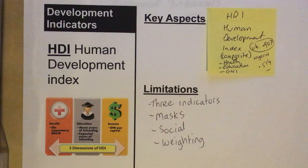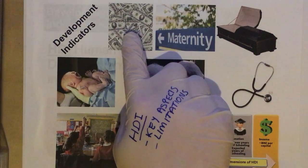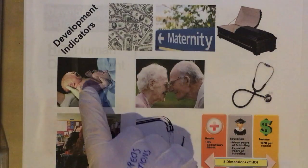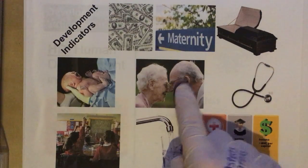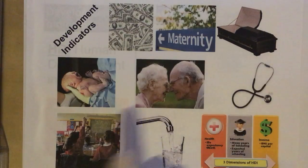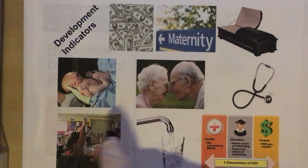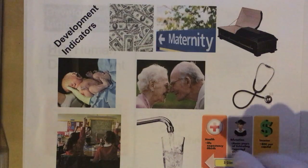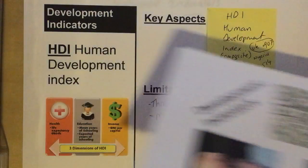Previously we've looked at some development indicators — here they are. So we've looked at GNI, birth rate, death rate, infant mortality, life expectancy, people per doctor, education, access to safe water, and HDI. That's what we're going to look at today.